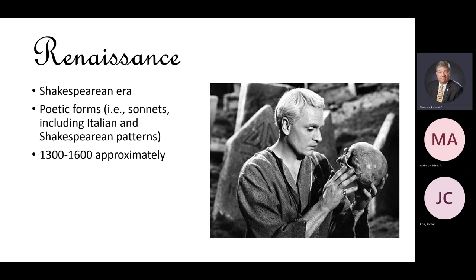Renaissance is just the French word for rebirth. There was a renewed interest in classic literature because the church had been recopying all the old Greek and Roman books, and now this material was being studied again and inspiring new literature. This is the time of Shakespeare. Some very technical poetry was first being put forward — the sonnet, which is a form of poetry, is always 14 lines, with a particular kind of rhyming pattern. There was an Italian way of doing it and then the English, or Shakespearean, way of doing it. So we started to have a science of language, a science of poetry coming out.